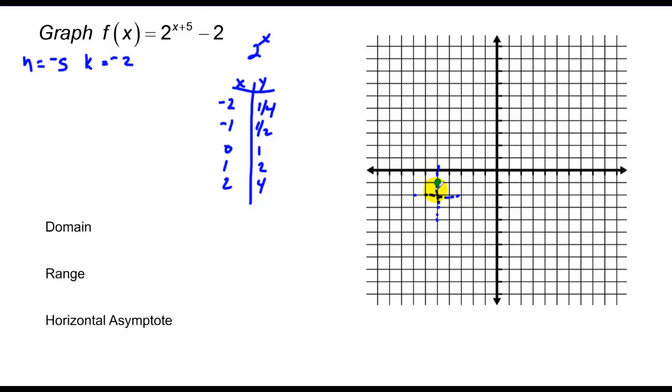I'll graph that off from this point here. So here's 0, 1. Here's 1, 2. 2, 4. Negative 1, 1/2. Negative 2, 1/4. Notice this base number is not quite as big, so this graph is not rising as quickly, but it's still rising. So it's a growth problem.